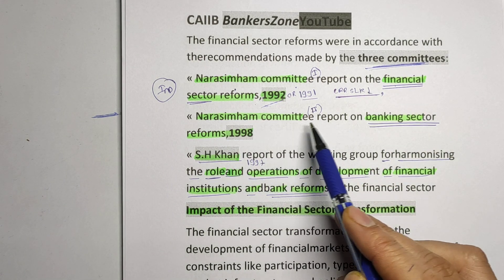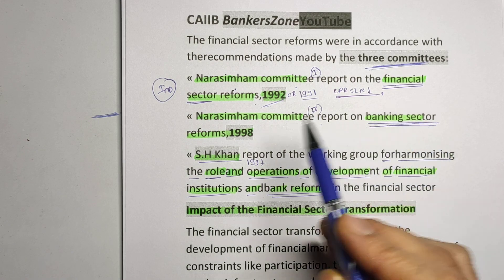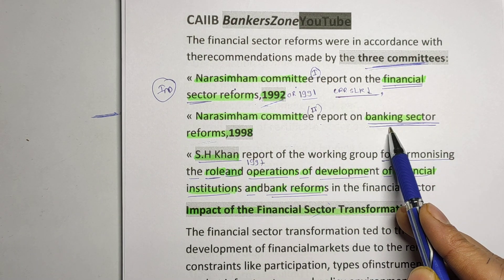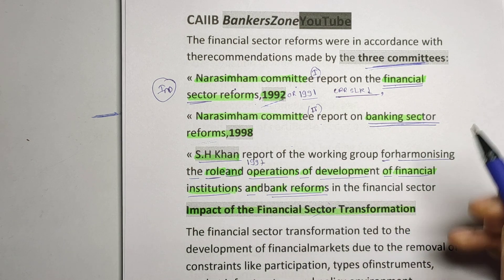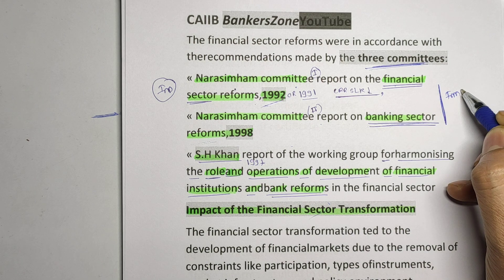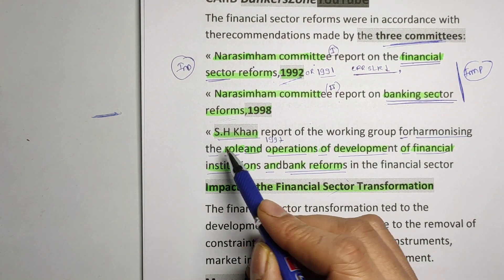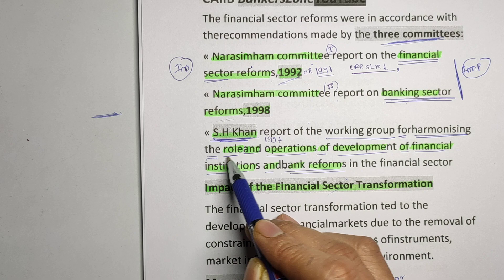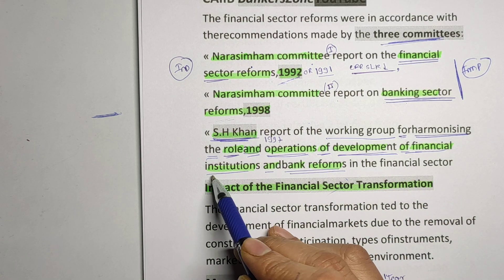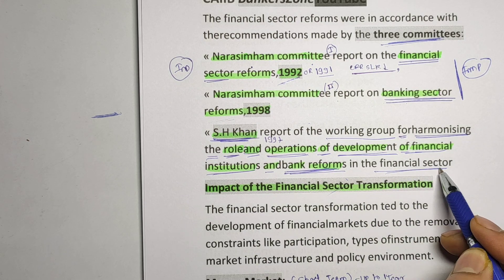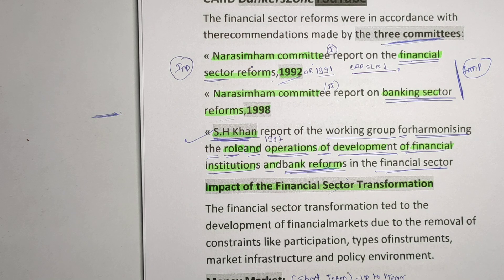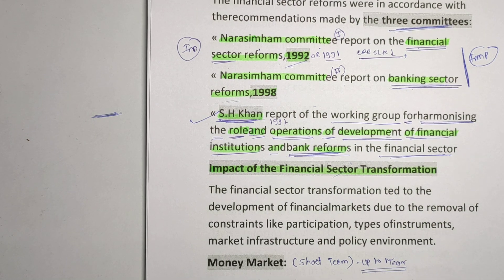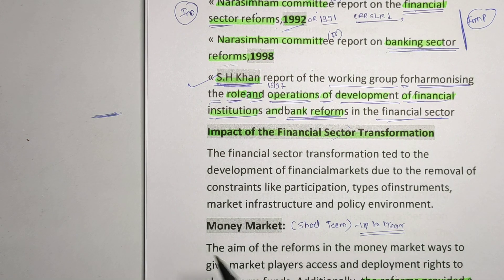The Narasimham Committee Two gave the report on banking sector reform in 1998. Remember: 1992 first committee on financial sector reform, and 1998 second committee on banking sector reform. The third is the S.H. Khan Report — S.H. Khan Committee on the working group for harmonizing the role and operation of development financial institutions and bank reform in the financial sector. These three committees and their reports you have to remember.